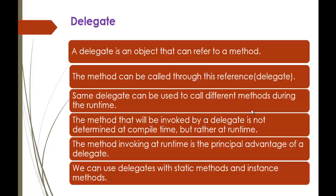Using a delegate reference variable, you can invoke multiple methods, but the condition is that the delegate signature and the method the delegate is going to invoke must match. The method that will be invoked by a delegate is not determined at compile time, but rather at runtime. This is the key advantage of delegates. We can also use delegates with static methods and instance methods, which we covered in the previous session.